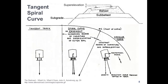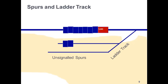Superelevation is changing the cross level of the track to allow balanced, higher-speed through the curve. The change in cross level keeps the center of gravity down through the middle of the track, so lateral and horizontal forces are minimized. On the next slide we see spurs and ladder track, often in industrial areas. Typically these are unsignaled spurs with hand-thrown turnouts. A spur is a piece of track connected to another track at only one end. A ladder track connects two or more of these spurs.